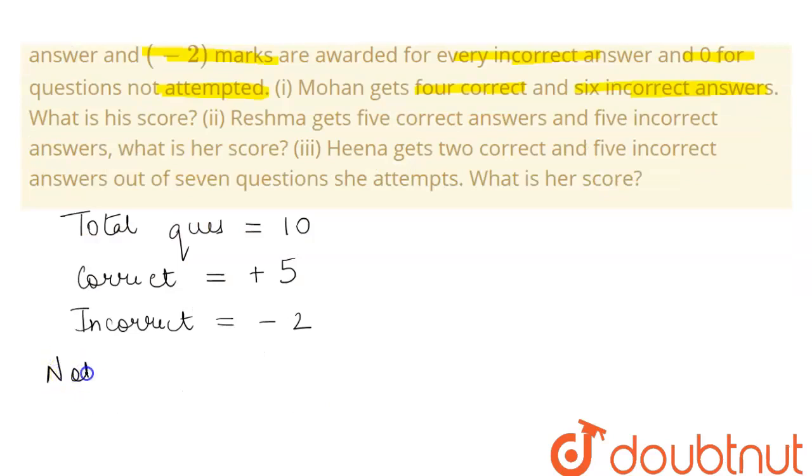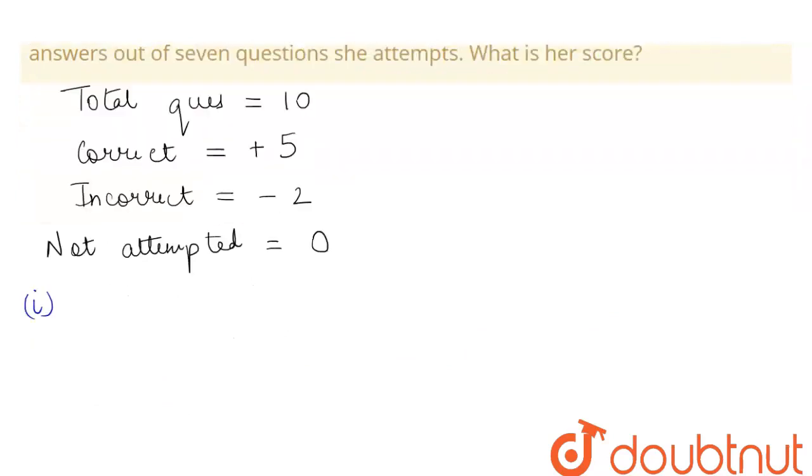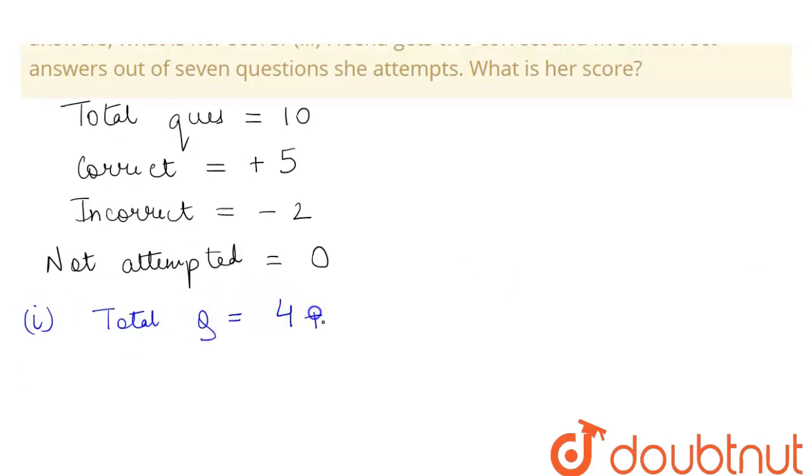If the question is not attempted, then we will get zero marks. So in the first part it says that Mohan gets 4 correct and 6 incorrect answers. Firstly, we will check if the total number of questions add up to 10. His total questions will add up to 4 correct and 6 incorrect, which means 4 plus 6, which is equal to 10. So this condition is satisfied. Now we will see his marks.